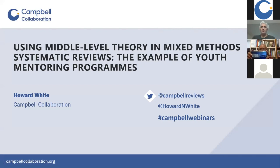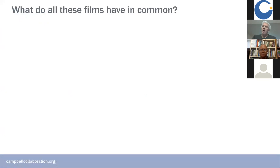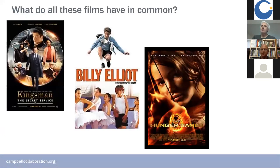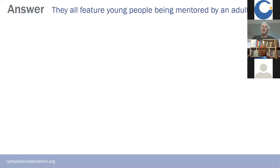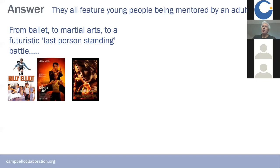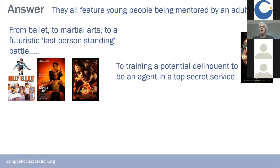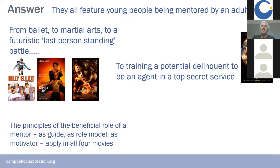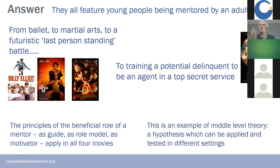Let's talk about what mentoring programs are. Here are four films — Billy Elliot, Karate Kid, Hunger Games, and Kingsman. What do all these films have in common? They all feature a young person being mentored by an adult — from ballet to martial arts to a futuristic battle to training a potential delinquent as a top agent. They all share the idea of a mentor as a guide, a role model, and a motivator. That's basically what middle-range theory is about.